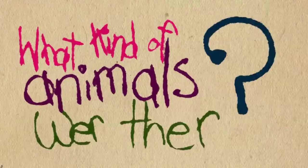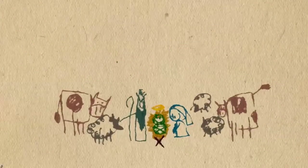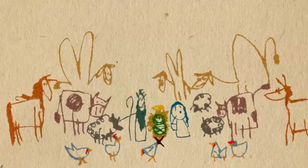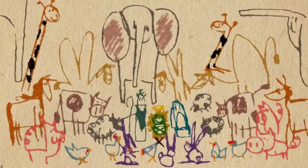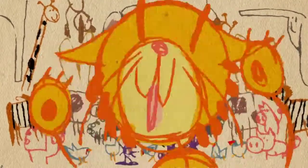What kind of animals were there? Sheep and cows. Horses. Chickens. Camels. Pigs. Elephants. Bunnies and rabbits. Dogs and kittens.